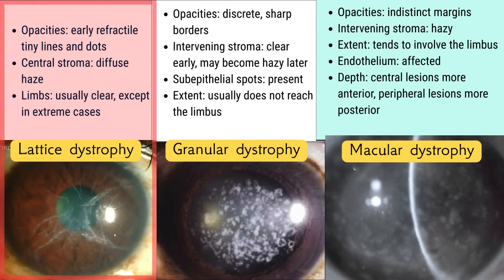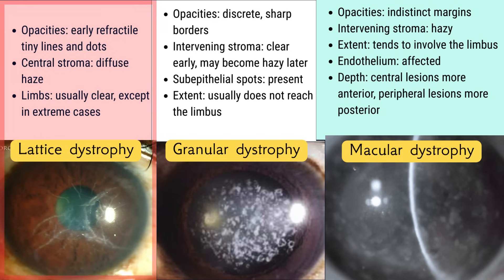Let us differentiate the three classic dystrophies based on morphological features. In lattice corneal dystrophy, the earliest lesions are fine refractile lines and dots forming a branching stromal pattern, giving the cornea a distinctive lattice-like appearance. The central stroma develops diffuse haze affecting vision over time, but importantly the limbal zone usually remains clear except in severe advanced cases.